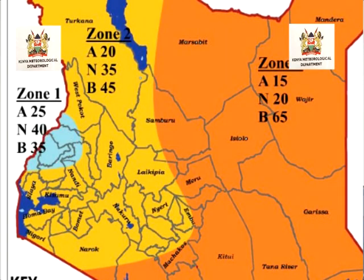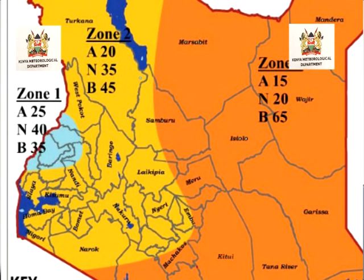The areas likely to receive below-average rainfall include counties in the Lake Victoria Basin — Siaya, Kisumu, Homa Bay, Migori, Kisii, and Nyamira — as well as the highlands west of the Rift Valley and central and south Rift Valley: Trans-Nzoia, Baringo, Uasin Gishu, Elgeyo Marakwet, Nandi, Kericho, Kakamega, Vihiga, Bungoma, Busia, Laikipia, Nakuru, and Narok.